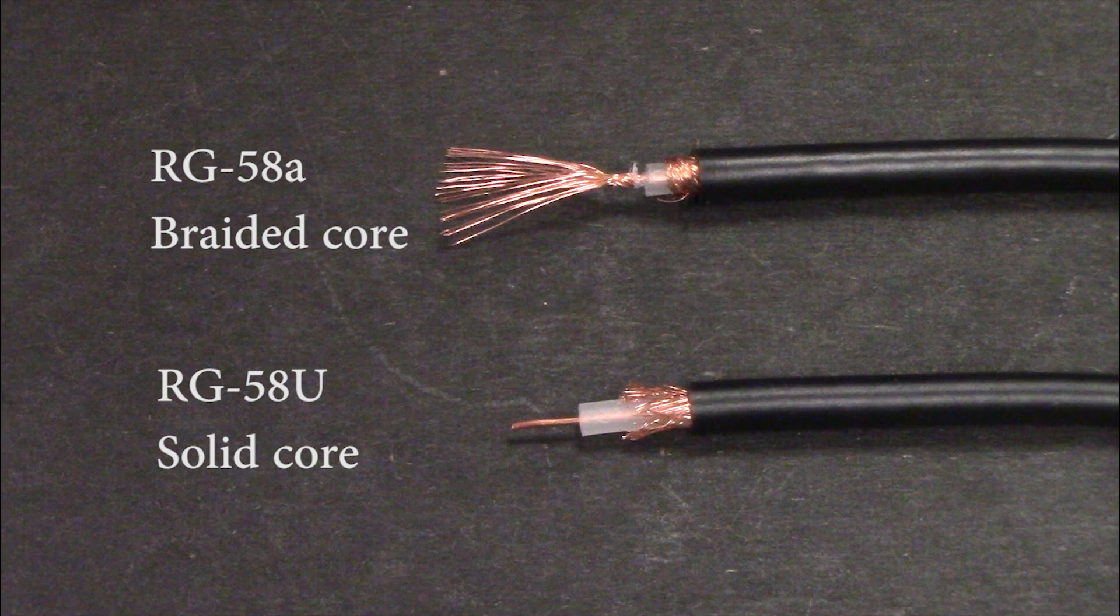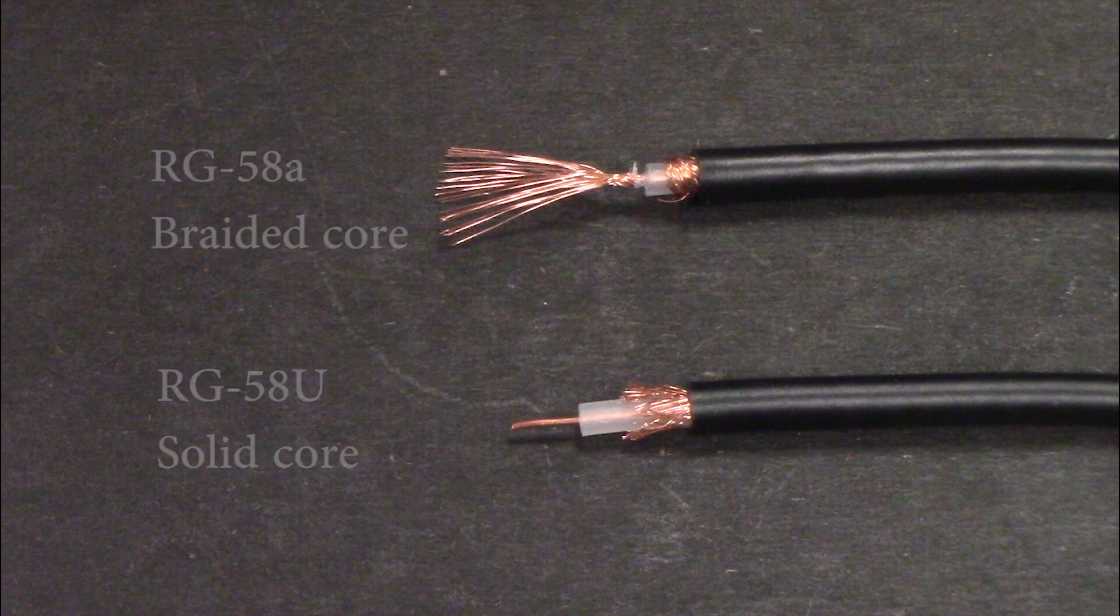which has a stranded center conductor, which is more flexible, but we'll use RG-58U for a better crimp and smaller decibel loss per meter.